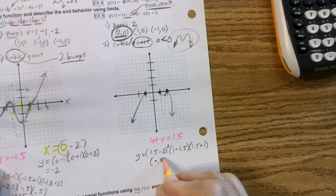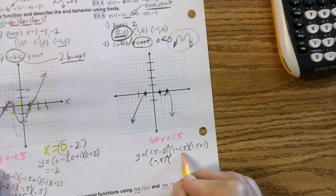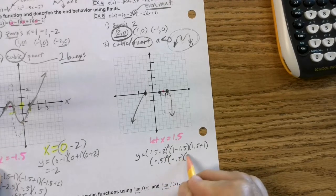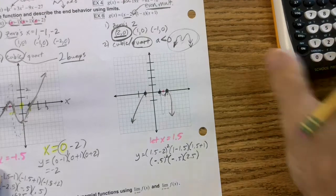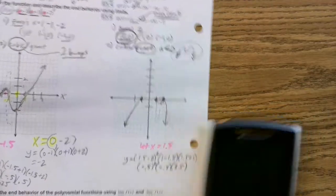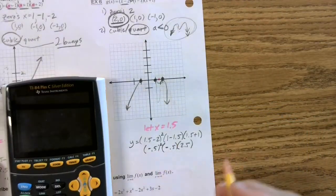We just got to do some number crunching now. So this is negative 0.5 squared times negative 0.5 times 2.5. So once again, I'm going to get out my calculator, and so here we go.